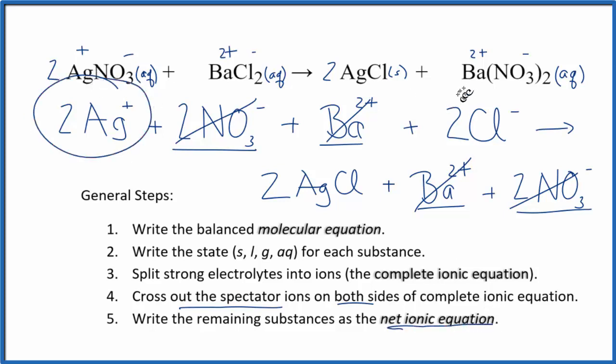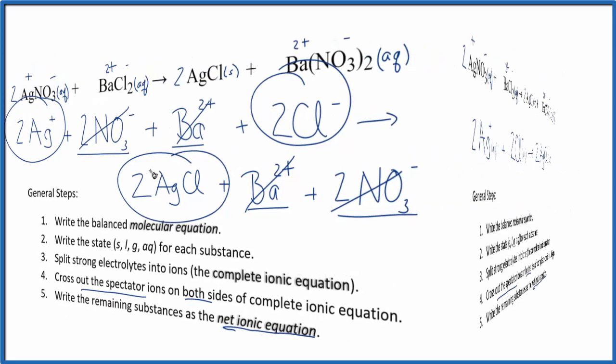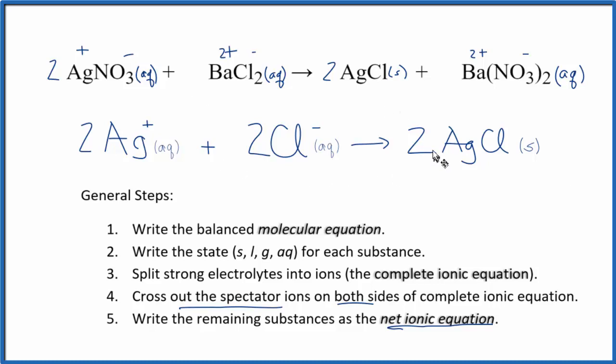2Ag+ plus 2Cl- gives us 2AgCl. Let me clean it up and add the states in. This is our net ionic equation for AgNO3 plus BaCl2.